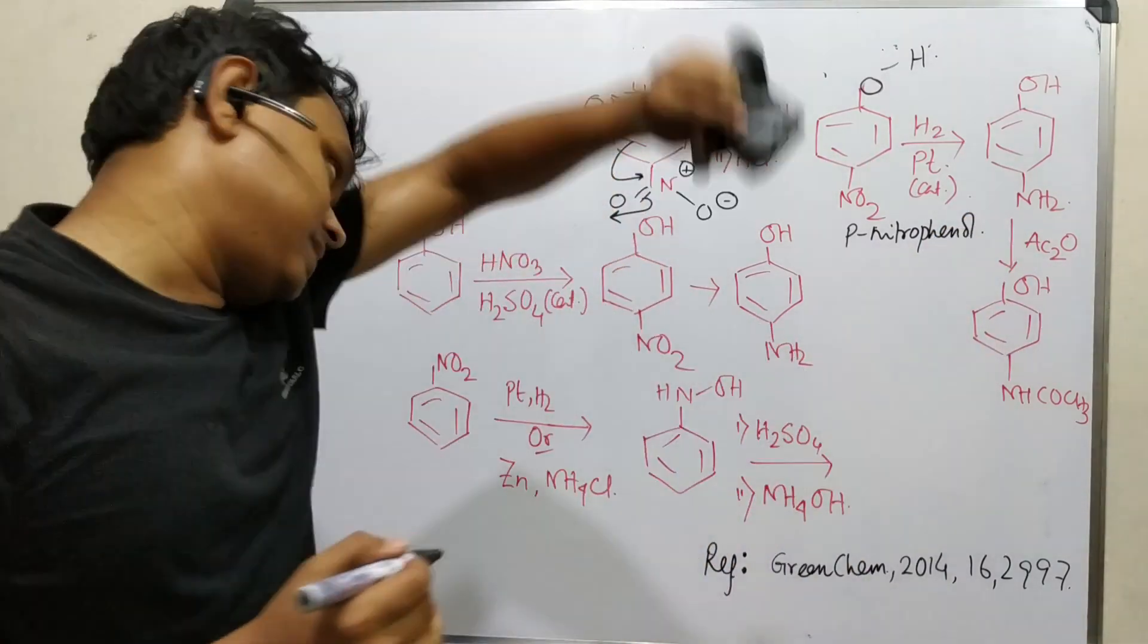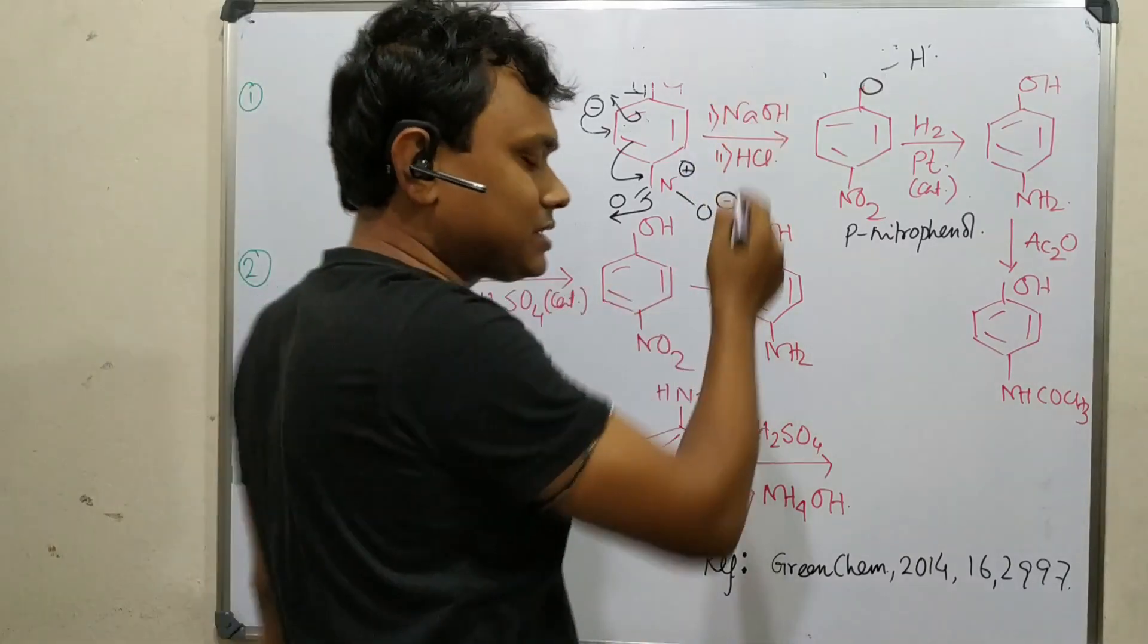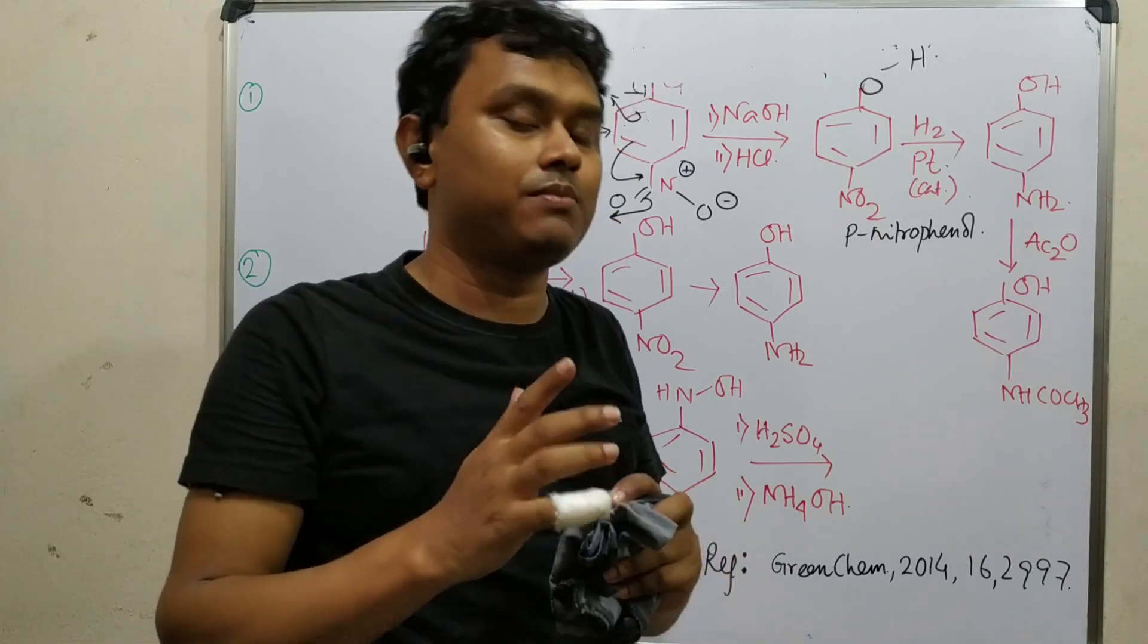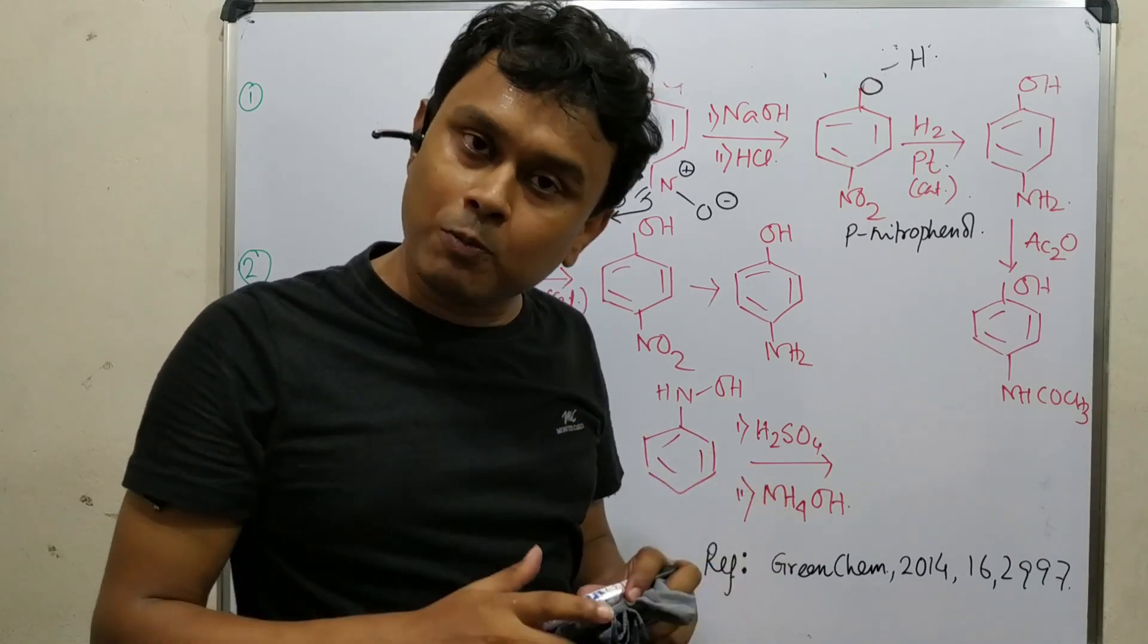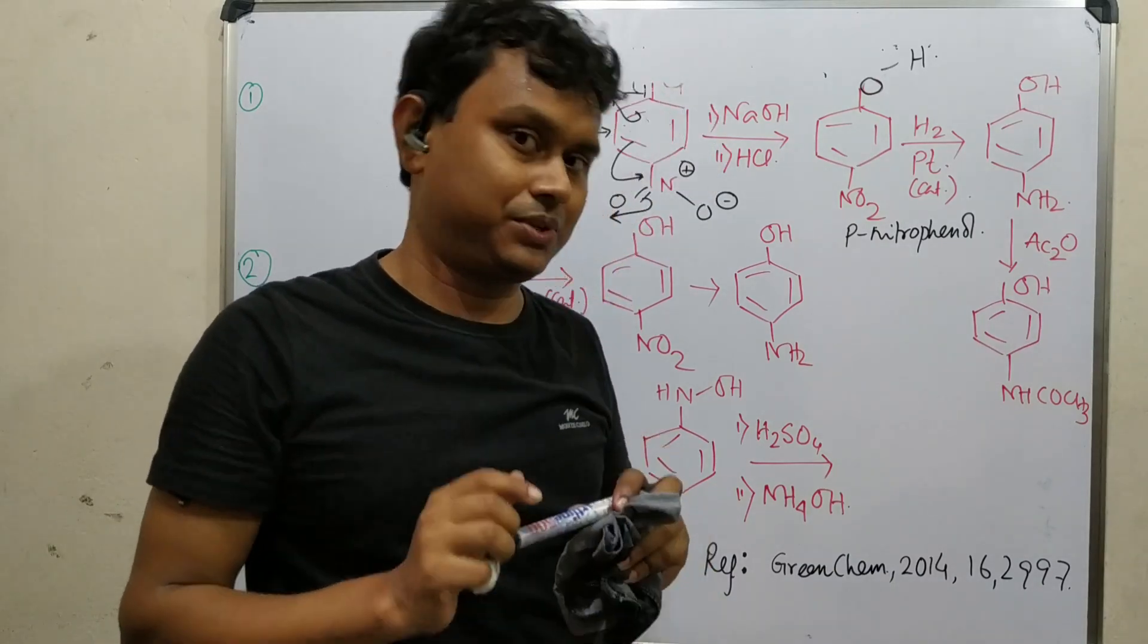Now the second step is the next step. And another thing, before going through details, I have previously written that paracetamol's name is N-acetyl para-aminophenol. Paracetamol is a common name. Chemical name is N-acetyl para-aminophenol. I suggest you please keep it in mind. If you keep it in mind, it will be easier to keep in mind about the pathway.